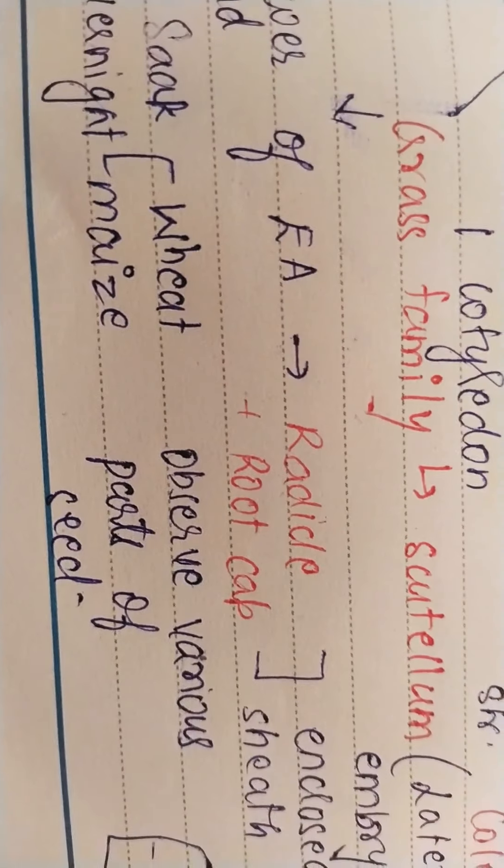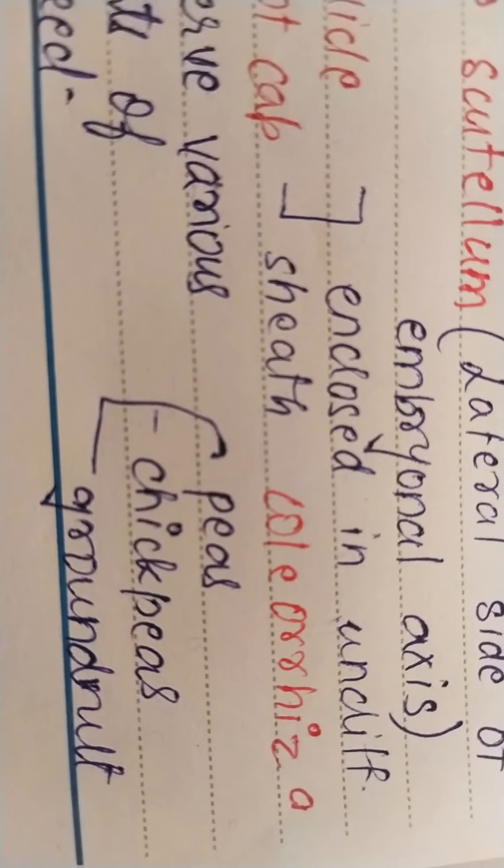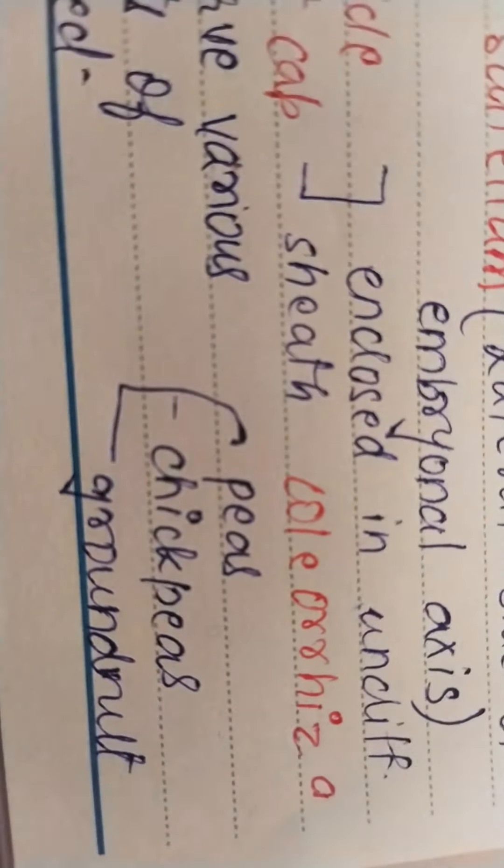Now the one cotyledon, lower end of this embryonal axis, is radicle and root cap which is enclosed in an undifferentiated sheath that is known as coleorhiza.